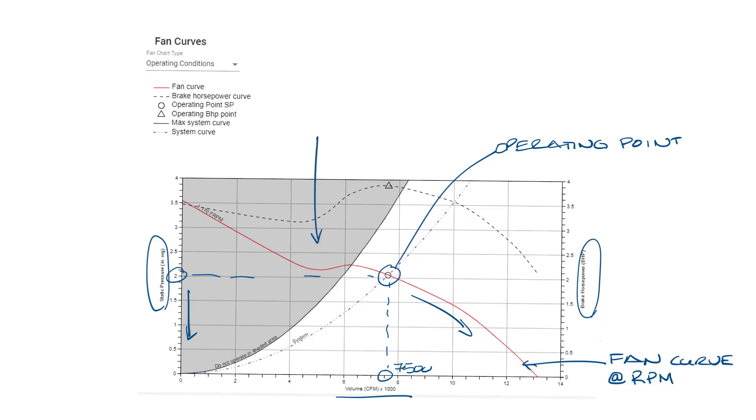You can see this dip over here at about two and a quarter inches of static pressure where you actually have two different CFMs. Somewhere around 4500 and about 5700 CFM. So which one would it operate at? Well, the fan is going to hunt between these two air flows at this point.